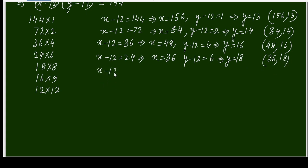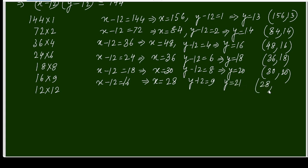x minus 12 equals 18, so x is equal to 30. y minus 12 equals 8, so y is equal to 20. So the pair is 30, 20. And x minus 12 equals 16, this gives us x equals 28, and y minus 12 equals 9, y equals 21. So 28 and 21. And for 12, x minus 12 equals 12, so x is equal to 24, and y is also 24.